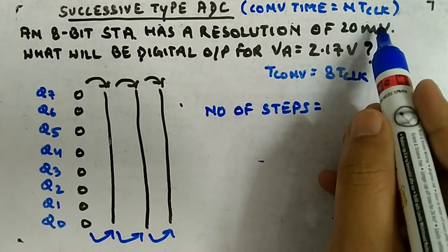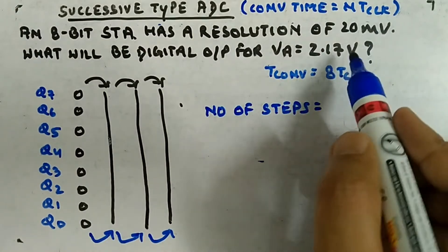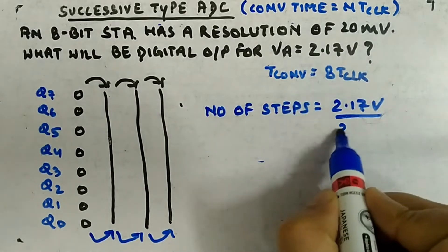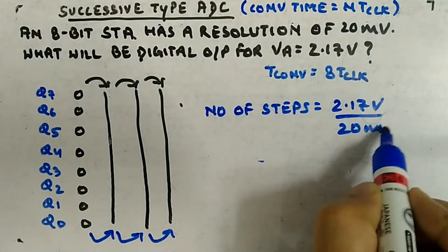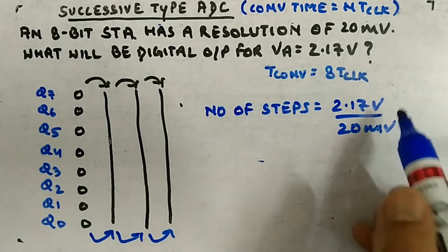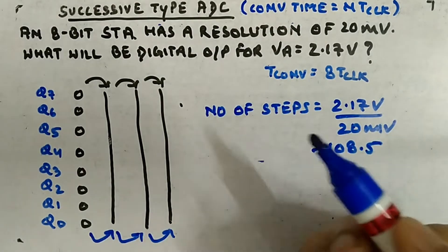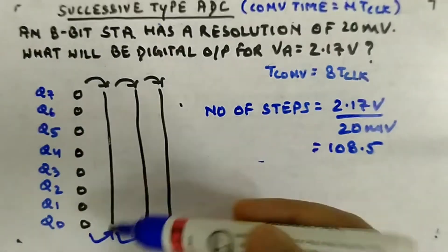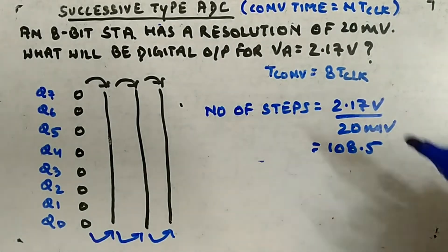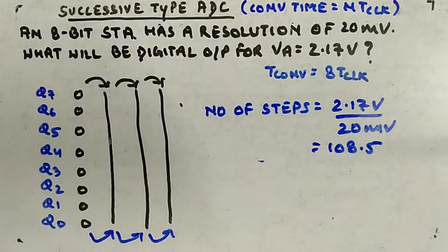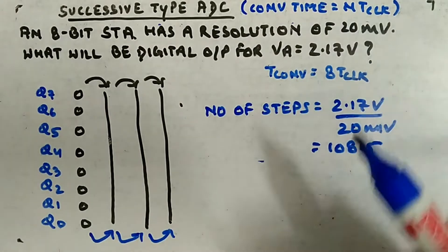You calculate the number of steps: take the input voltage, 2.17 volt, and divide by the resolution, 20 millivolt. The result is approximately 108.5. This many steps will be required — you can think of it as the decimal equivalent needed. So it will be around 108 or 109.